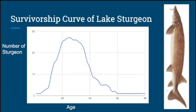This is a survivorship curve of the lake sturgeon. The y-axis is the number of sturgeon and the x-axis is the age. At 10 years of age, the sturgeon population is relatively low. As they reach around 20 to 30 years, the number of sturgeon is at its highest. The number of sturgeon then goes down from around 30 and levels out at around 60 years.